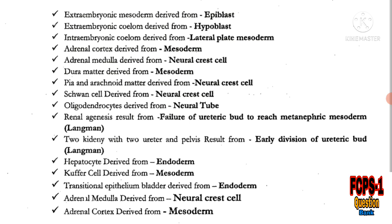Transitional epithelium of the bladder is derived from endoderm, and the epithelium over the trigone of the bladder is derived from mesoderm. Adrenal medulla is derived from neural crest cells, and adrenal cortex is again derived from mesoderm. Remember and memorize these derivatives.